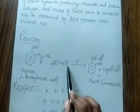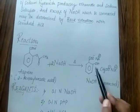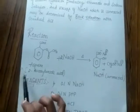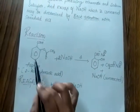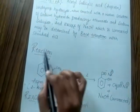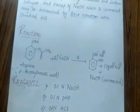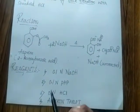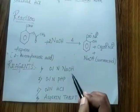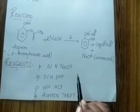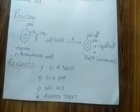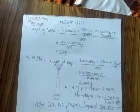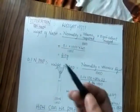When aspirin is treated with NaOH under warm conditions, ethanoate and sodium salicylate are formed as the products. The IUPAC name of aspirin is acetylsalicylic acid. The reagents required for this experiment are 0.1 normal sodium hydroxide, 0.1 normal PHP (potassium hydrogen phthalate), 0.1 normal hydrochloric acid, and an aspirin tablet as the sample.